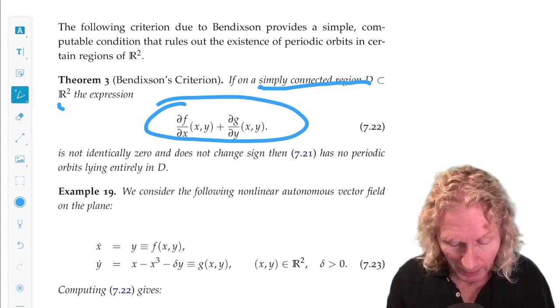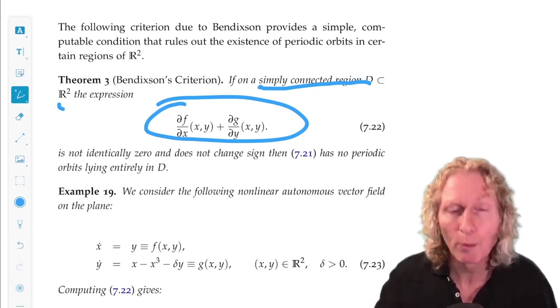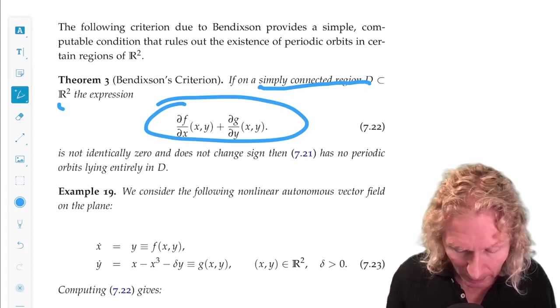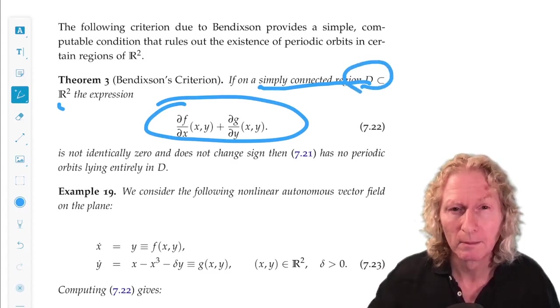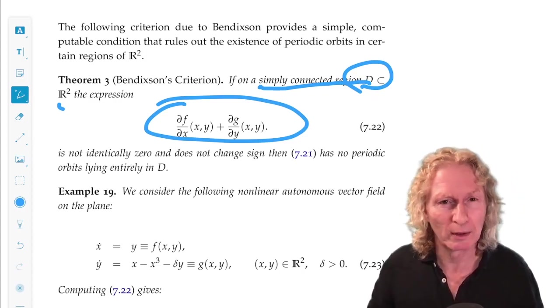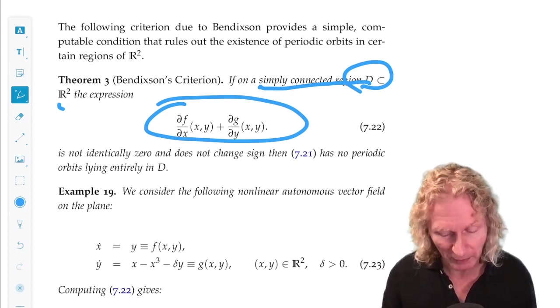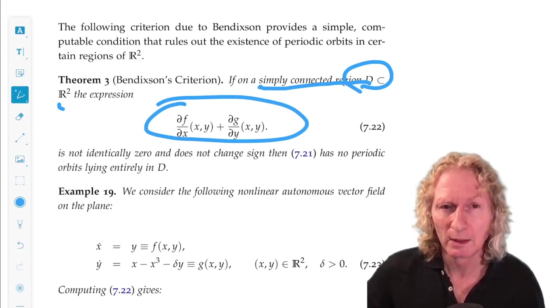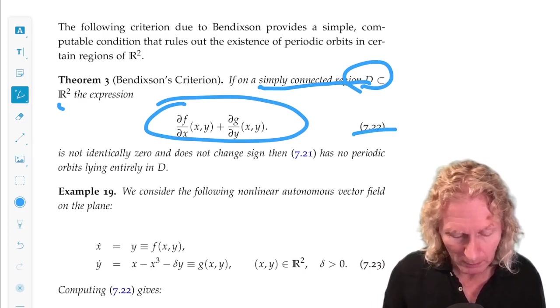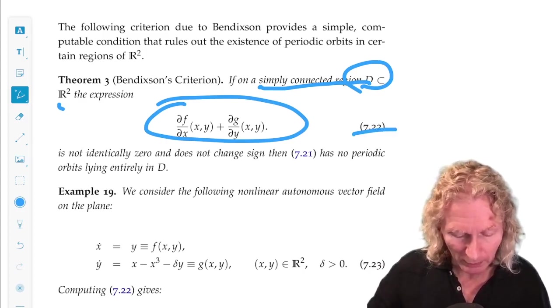then the vector field has no periodic orbits lying entirely in this simply connected region D. It could have some that lie outside and partly outside, partly inside, but that's not what this says. Entirely within D, the region where this quantity (7.22) is not identically zero and does not change sign.